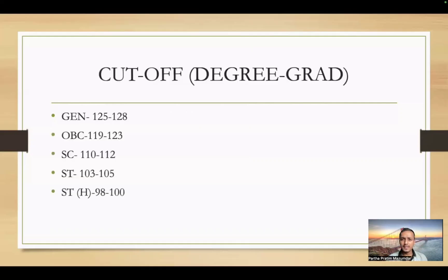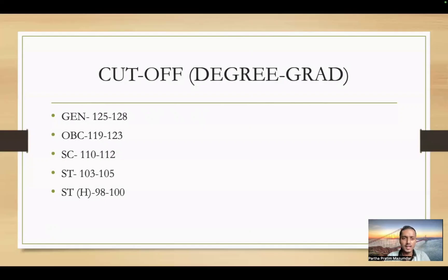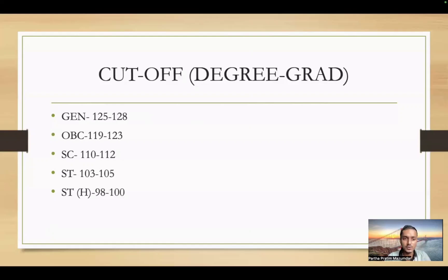Now, the cut-off: this is for degree-level or graduation without computer qualification. If you don't have a computer certificate, the cut-off applies as follows. This is not official — it is based on my prediction and data. General: 125 to 128. OBC: 119 to 123. SC: 110 to 112. ST: 103 to 105. ST Hills: 90 to 100. For each category, approximately 3 to 4 marks difference exists between categories.